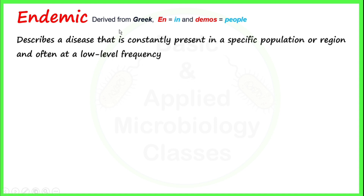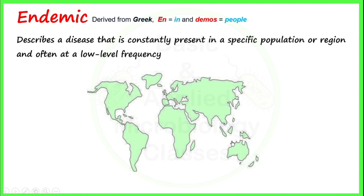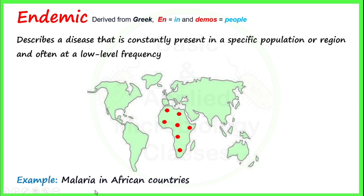Let's try to understand endemic with the help of this picture. This picture is showing us the constant presence of a disease in a specific region, or we can say in a specific geographical area. Now for an example of endemic — malaria in African countries is a very good example of an endemic disease. The cases of malaria constantly reappear in these countries, that's why we say malaria is endemic when it comes to African countries.